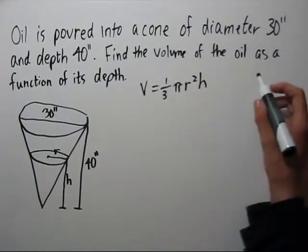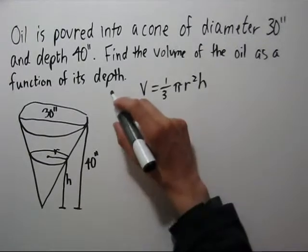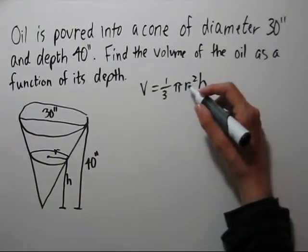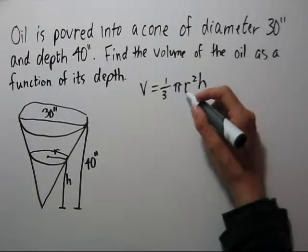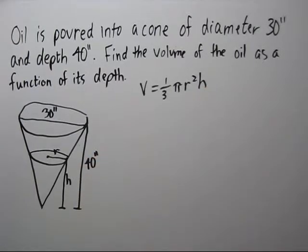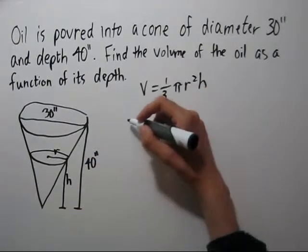Now we want the volume as a function of its depth, which is h, but this is a function of the radius and the depth. So we want to find a formula that relates the radius to the height. One way to do this is similar triangles.